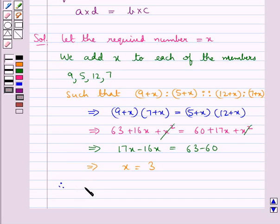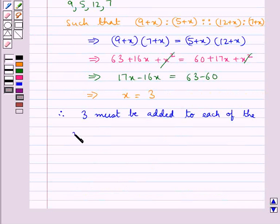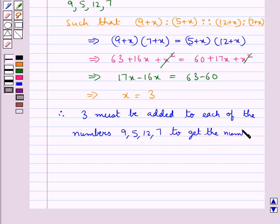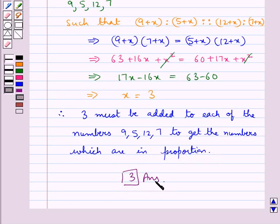Therefore, 3 must be added to each of the numbers 9, 5, 12, and 7 to get numbers which are in proportion. Thus, 3 is our final answer. This completes the session. Hope you have understood the solution.